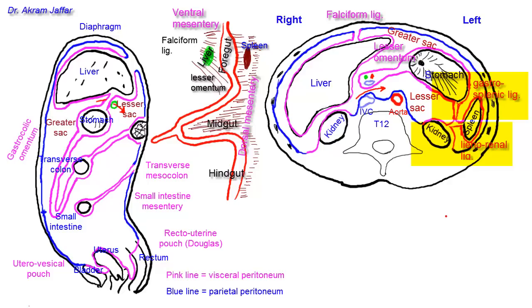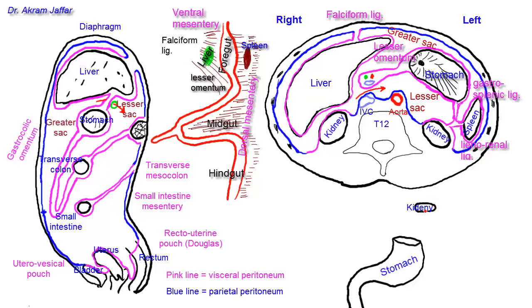Now let me use another diagram for further clarification, representing the rotation of the foregut. The stomach rotates 90 degrees so that its left surface becomes anterior and its right surface becomes posterior. Here is the stomach, the beginning of the duodenum, the kidney on the posterior abdominal wall. I'll draw the peritoneum in green: on the posterior abdominal wall, reflected in front of the kidney, and then reflected from the kidney to the stomach — because the stomach rotates there will be a recess here.